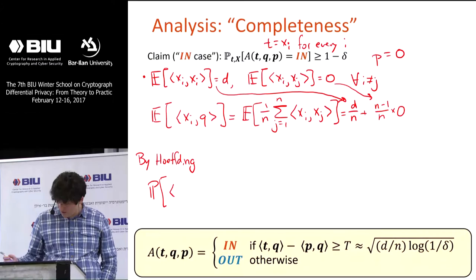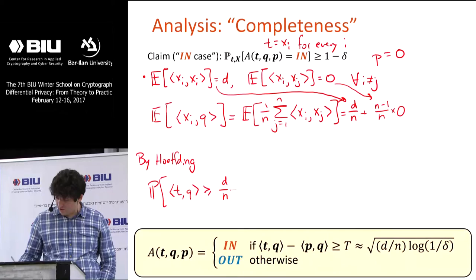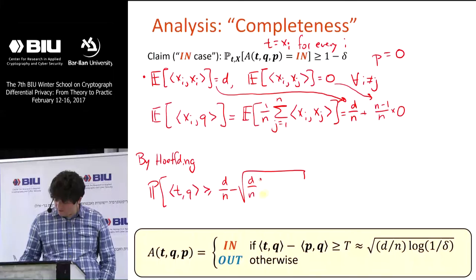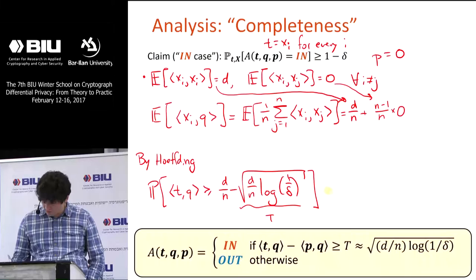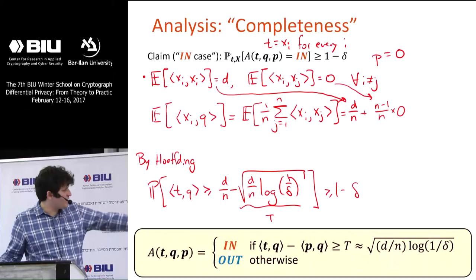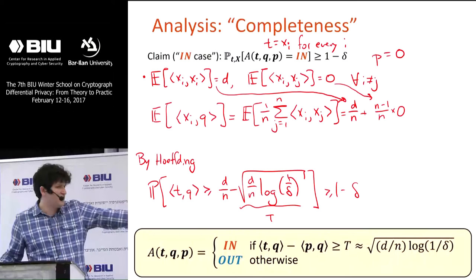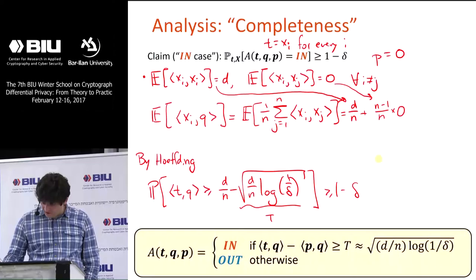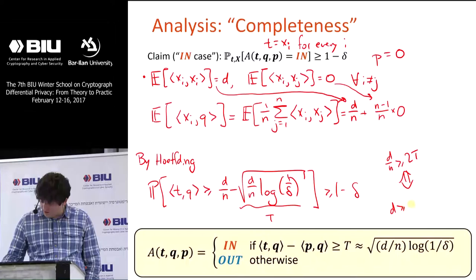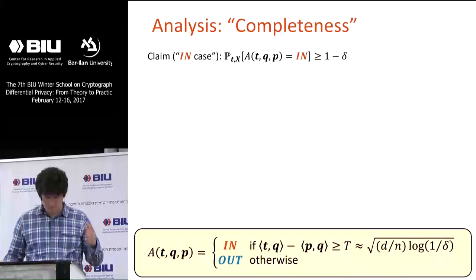We can apply the same Hoeffding argument. For each X_i in the dataset, the correlation T·Q has probability at least 1-δ of being at least D/N minus the same threshold term. So we need D/N to be bigger than two times the threshold, which works out to: D bigger than N·log(1/δ). This concludes the analysis for the uniform case.